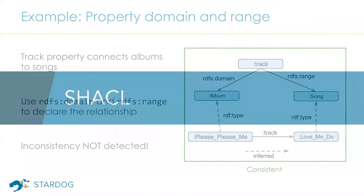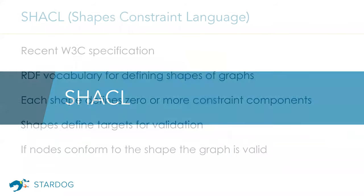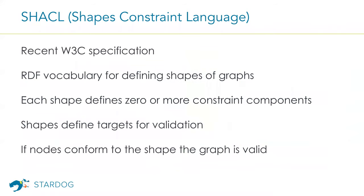That's where the SHACL language comes into play as a relatively new specification from W3C. SHACL is an RDF vocabulary to define constraints over RDF graphs for the purpose of validating the contents of that graph. The building block of SHACL is the notion of a shape. Each shape has some constraints associated with it, and shapes also define their target nodes for validation. The validation process checks if the target nodes conform to the constraints defined for that shape.